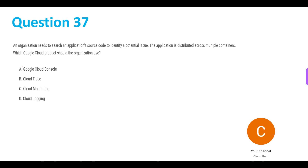Let's read the options. Option A: Google Cloud Console. B: Cloud Trace. C: Cloud Monitoring. And D: Cloud Logging.